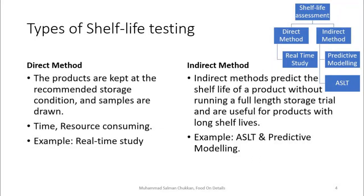Shelf life testing can be classified into two types: direct and indirect. In the direct method, products are kept in recommended storage conditions and samples are drawn over a long period. The main disadvantage of this method is that it is time-consuming and resource-intensive. It is very well suited for products with short shelf life.